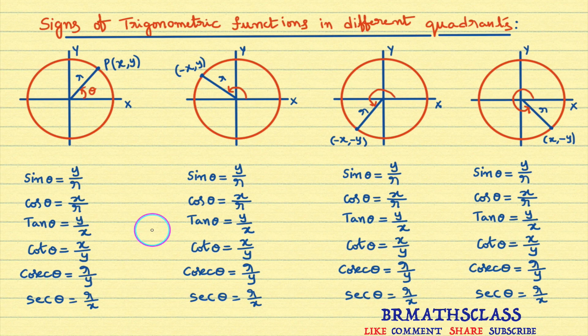Signs of trigonometric functions in different coordinates. We know that in the first quadrant, all trigonometric functions are positive. This video is all about why: why in the first quadrant all trigonometric functions are positive; in the second quadrant, sine and cosecant functions are positive and remaining all trigonometric functions are negative. That question will be answered by the end of this video.